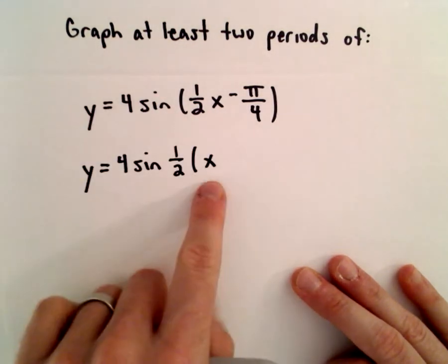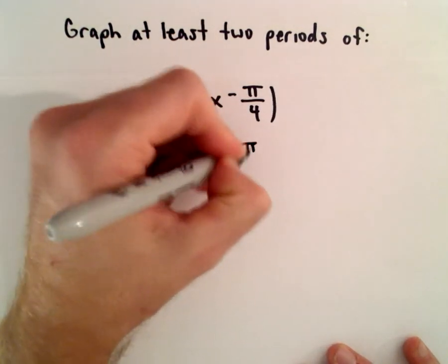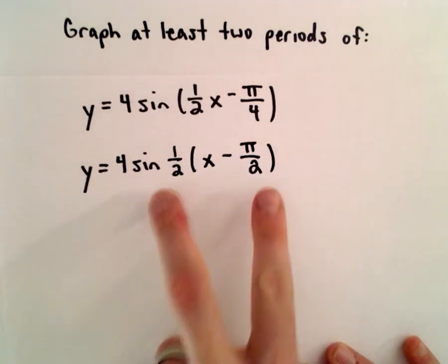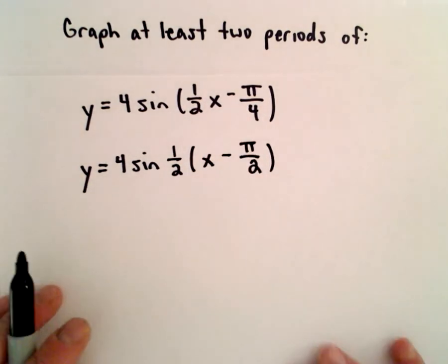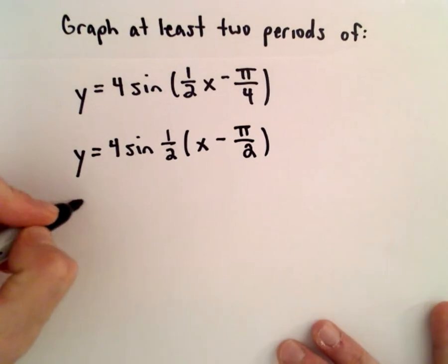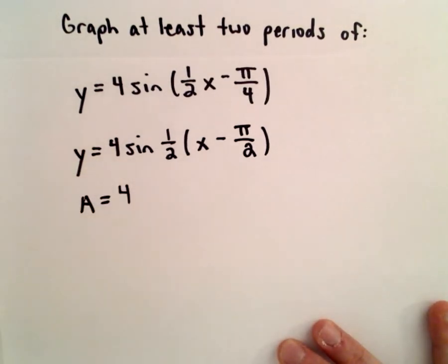Well, 1 half times x will be 1 half x. I guess 1 half multiplied by pi over 2 would give us pi over... well I should say 1 half times negative pi over 2 will give us negative pi over 4. Alright, so the amplitude is going to be the absolute value of 4, which is just 4.